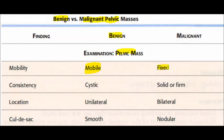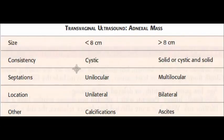For malignant masses, it will be fixed. Consistency: benign will be cystic, malignant will be solid or firm. Location will be unilateral in the case of benign; malignant will be bilateral, involving both sides. Regarding the cul-de-sac, benign will be smooth and malignant will be nodular.